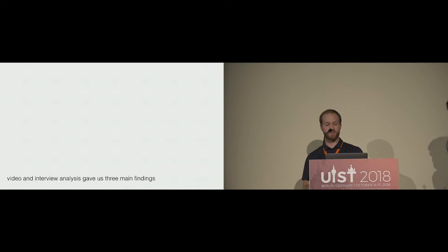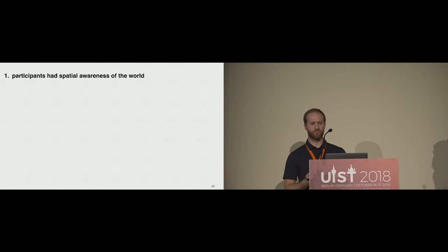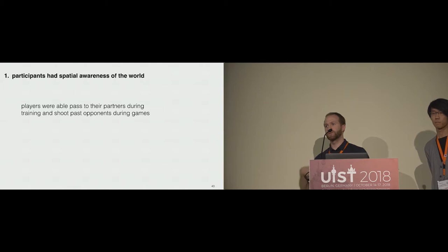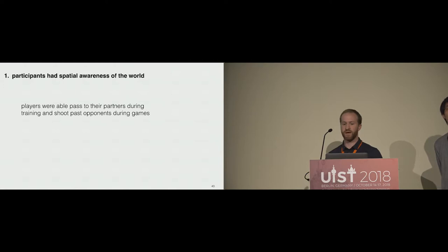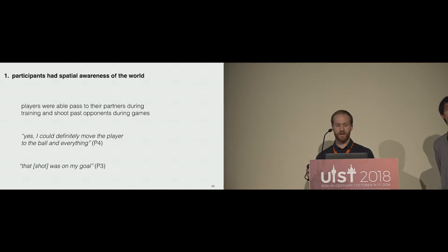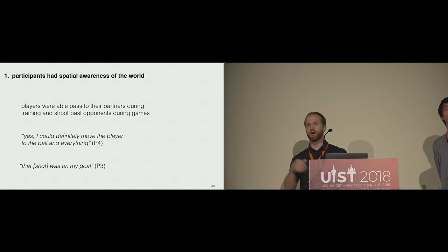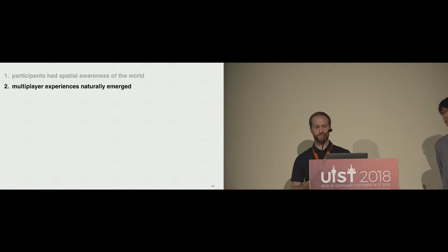We did video and interview analysis to understand the experience and came up with three main findings. First, participants had a spatial awareness of the world — players were able to pass to partners during training and shoot past opponents during games, meaning they could act while tracking where others were and perform corner shots and other tricks. They could also move to the center of the field or either end by spatial memory of the environment.